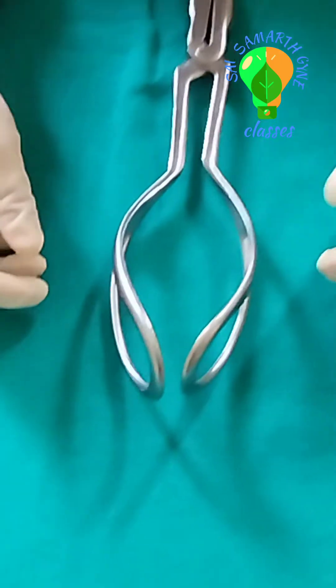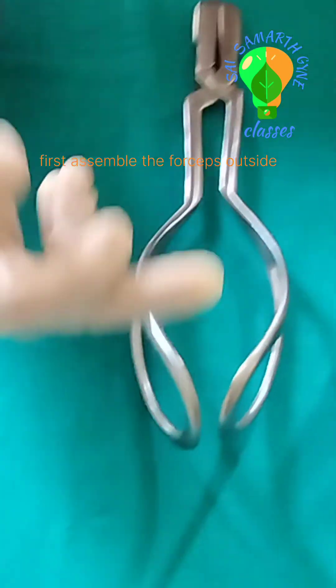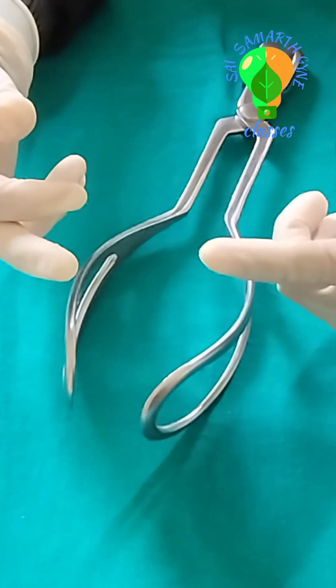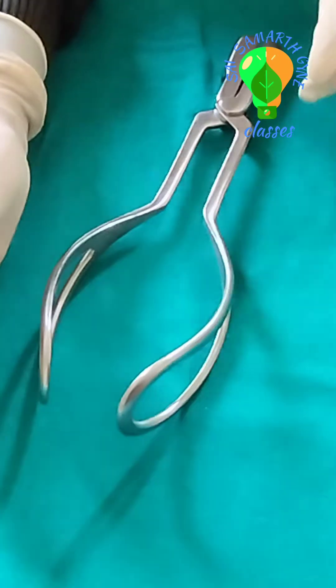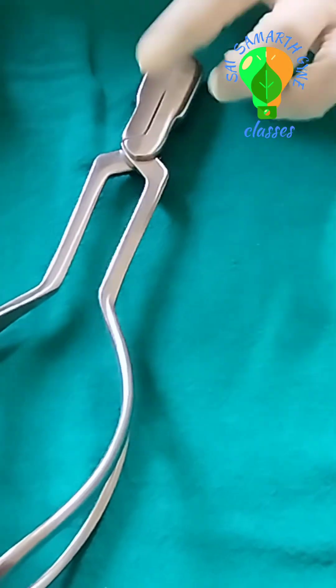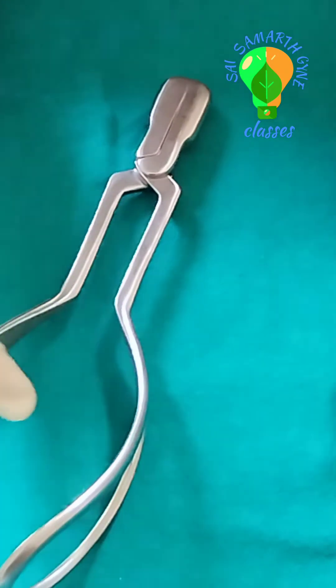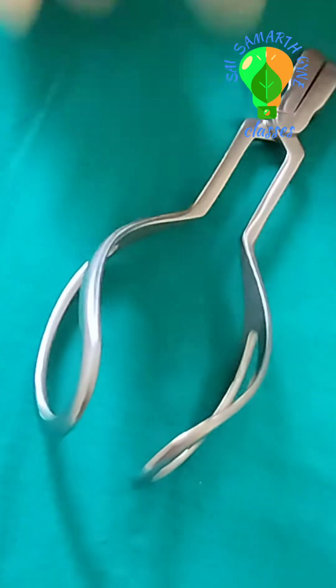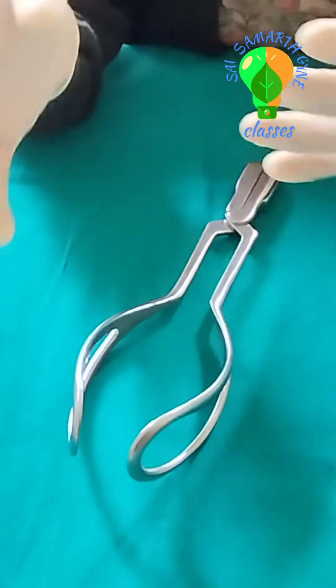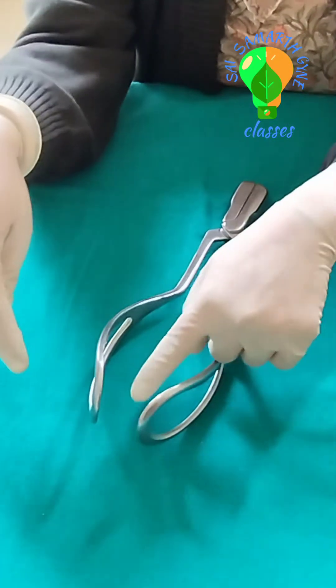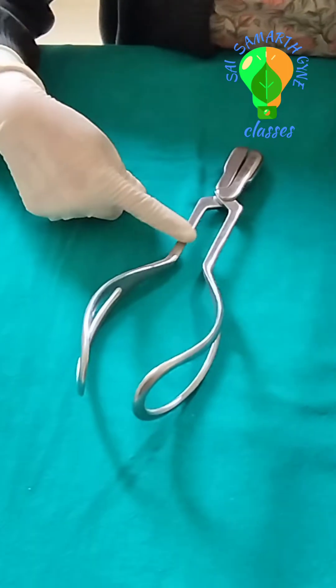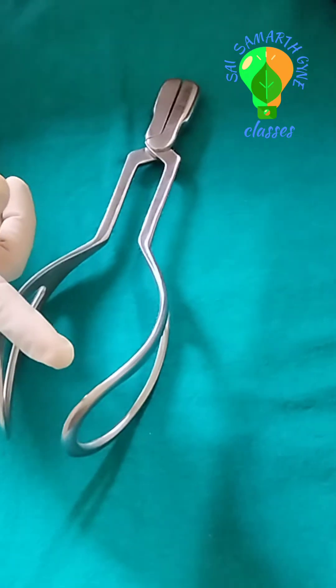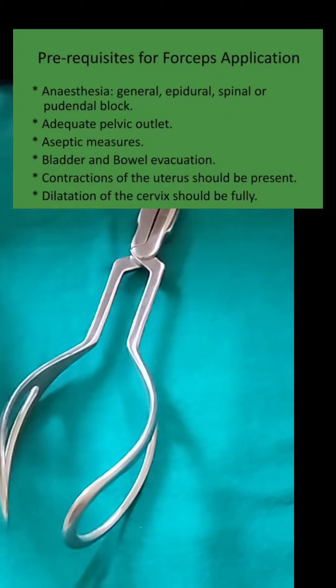When the forceps is assembled, two things we can see. One is the curvature on the assembled forceps. It accommodates the fetal head. This is the cephalic curve. Here the upward curve which is visible over here, the upward curve is known as the pelvic curve and it fits inside the maternal pelvis.